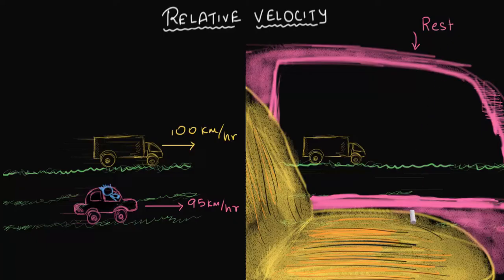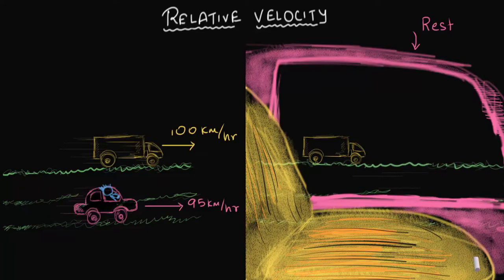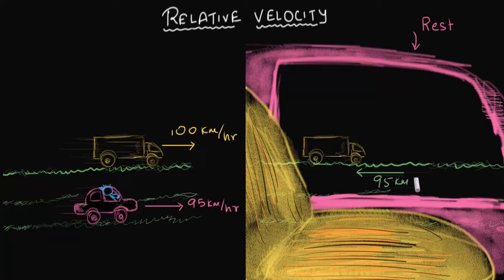Your car is at rest as seen by you. But when you look outside, you now see the ground whizzing backwards. As seen from the ground, the car is going forward 95 kilometers every hour, so it makes sense that as seen from the car, you would see the ground going backward at 95 kilometers per hour.